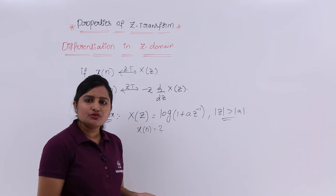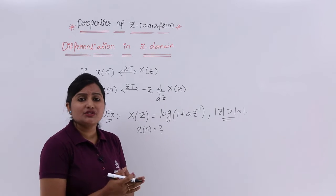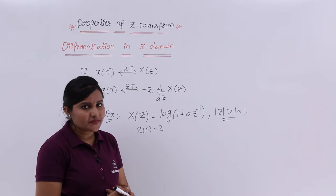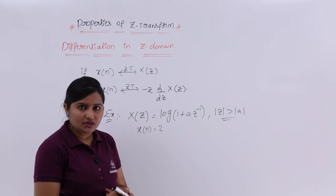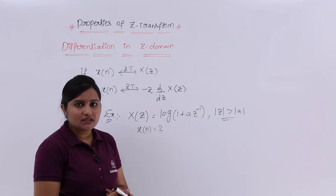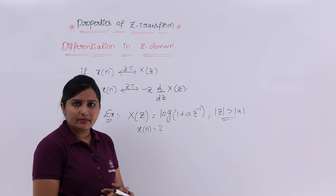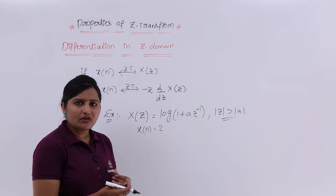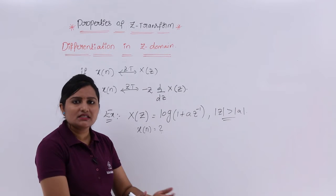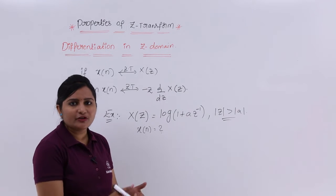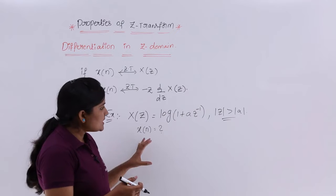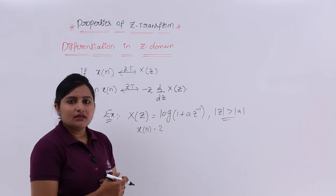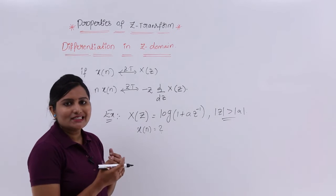Generally, what we need to do is use the inverse Z transform equation: x(N) = (1/2πj) ∮ X(Z) Z^(N-1) dZ. By using that equation directly, we cannot even proceed to the next step after substituting. These types of problems can be solved by using differentiation in Z domain.